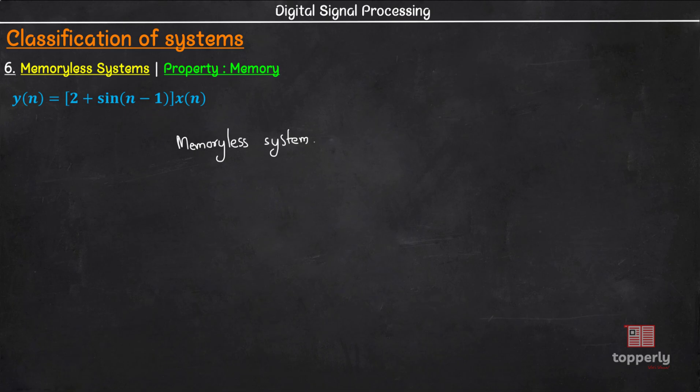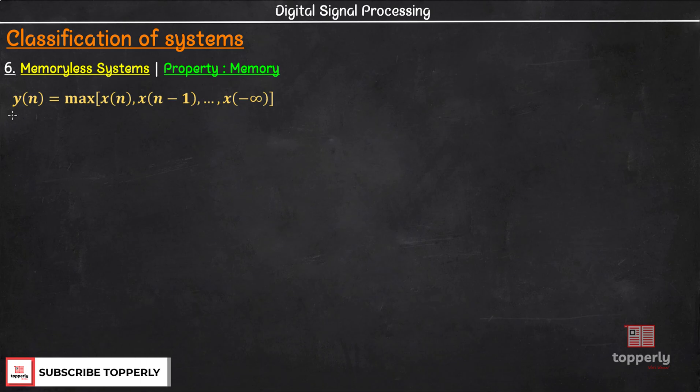Now, let us see the second example. We have the system y(n) = maximum of x(n), x(n-1), etc., all the way to x(-∞). So, to find out the output at any instant, the system should also have the knowledge of all the past input to the system. Then only the system can figure out the output which is the maximum value among them. Therefore, as the system output depends on past values, this is a dynamic system.